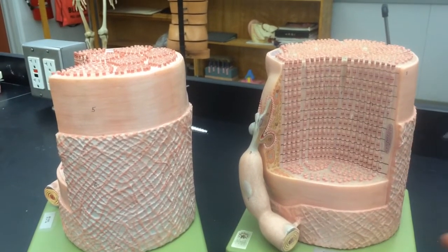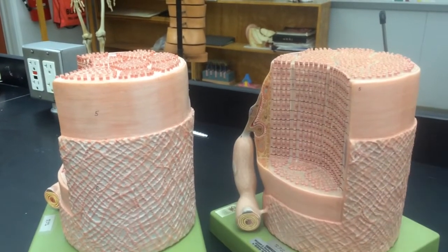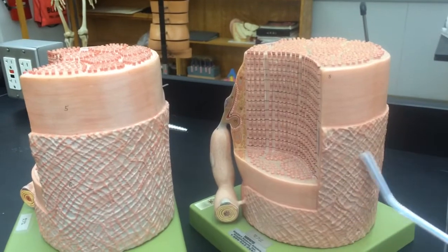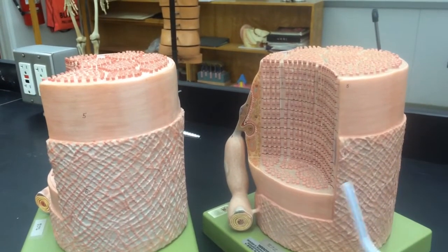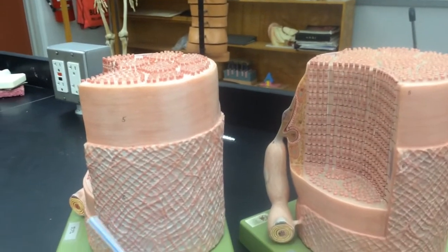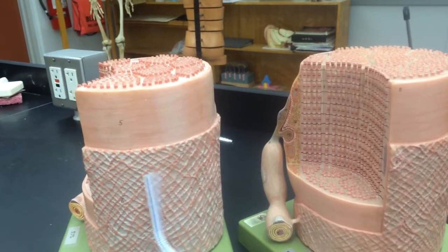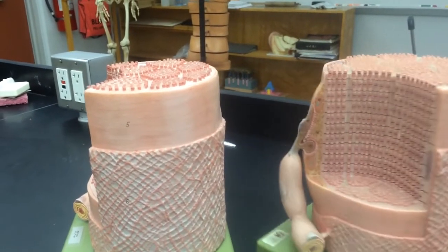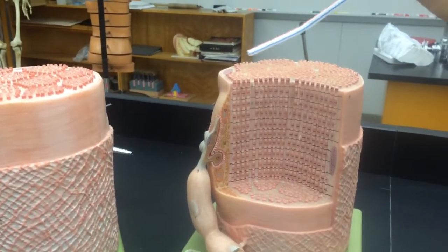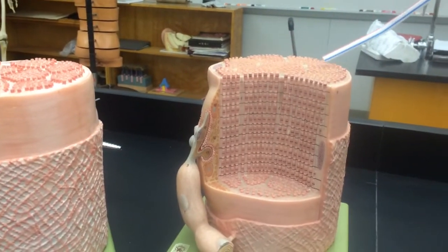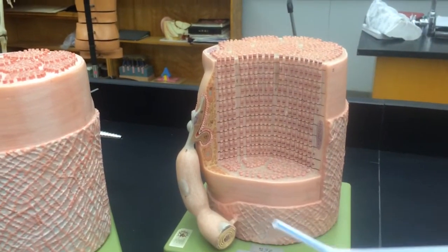When you look at the connective tissue surrounding this muscle fiber, we have to understand that this connective tissue is referred to as endomysium. This whole area is the connective tissue that wraps all of the individual myofibrils located within the sarcoplasm of this cell, which is the muscle fiber.